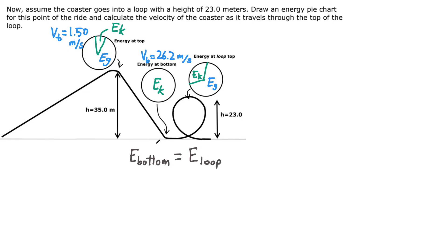At the bottom of the hill, again, we only had kinetic energy, and the formula for kinetic energy is one-half mv squared. I could put subscript b on there to just say that this is the speed at the bottom of the hill.